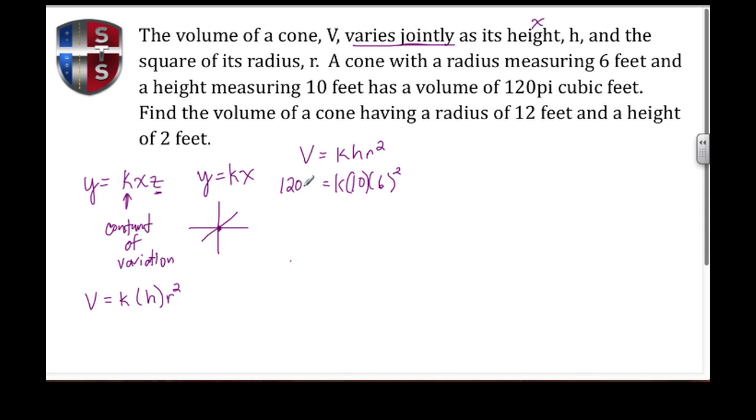We don't know the constant of variation, but we know the volume is 120π. We begin by using order of operations. We do exponents first: 6 squared is 36.